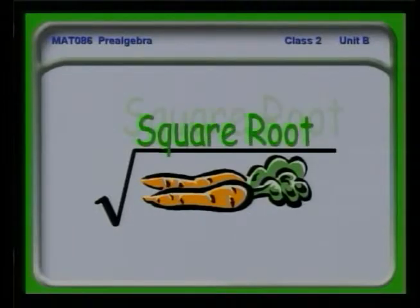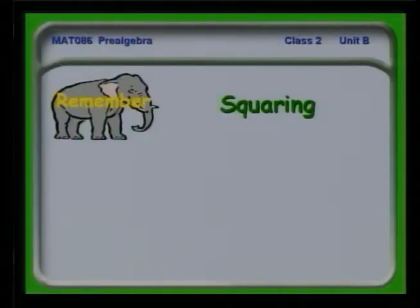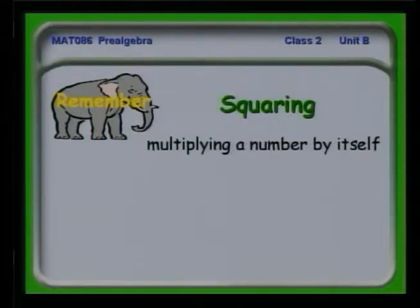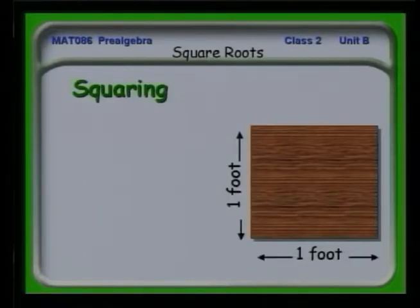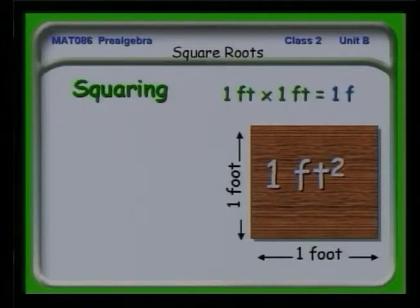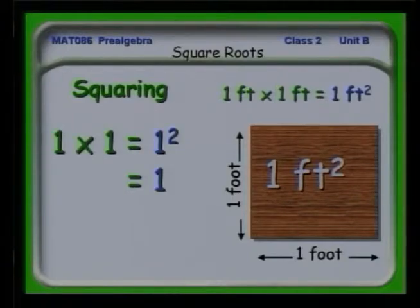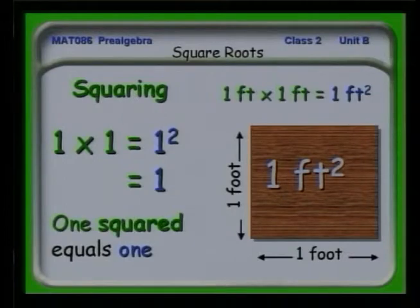Let's get started with square roots. Remember, the process of squaring is multiplying a number by itself. So if we have 4 times 4, that's 16 — four boxes by four boxes. If we have something that's 1 foot by 1 foot, we have 1 square foot, or 1 foot squared. 1 times 1 is 1 squared, and 1 squared equals 1.